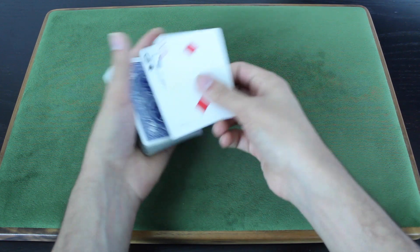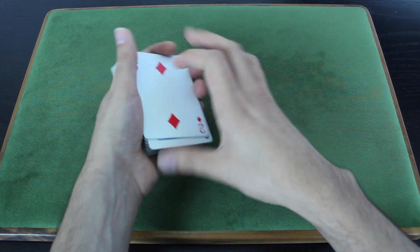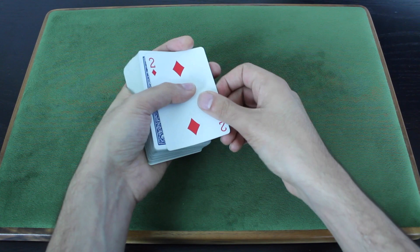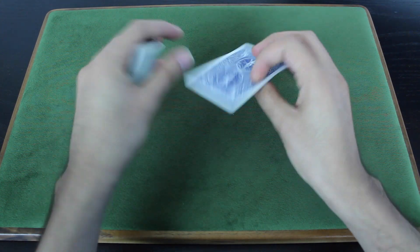So we have the two of diamonds here. This is a double. There's the queen of spades beneath it. But if I want to ditch that queen of spades, I do the KM move, and it looks something like that.